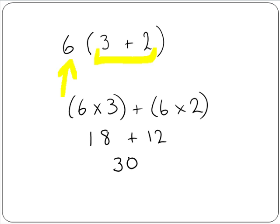Normally with numbers inside the brackets, such as this, we would work out what is inside the brackets first. So 3 plus 2 would give us 5, and then we multiply this by the 6, which would give us 30.